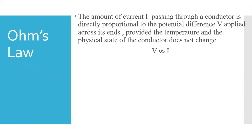Mathematically, V is directly proportional to I, or V equals IR when we remove the sign of proportionality and put the sign of equality. Here R is the constant of proportionality and it is known as the resistance of the conductor.